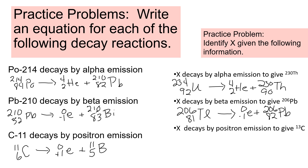The last example: unknown parent decays by positron — 0 +1 electron — to give C-13. Carbon's atomic number is 6. Six plus 1 is 7 for the parent's bottom number, and the top number stays 13. Element number 7 is nitrogen, so the parent is N-13.